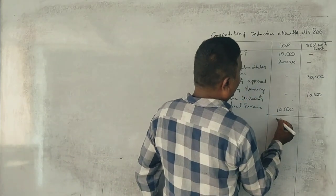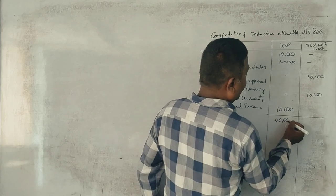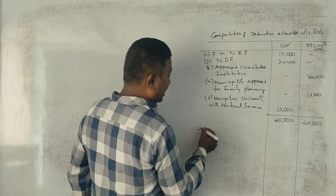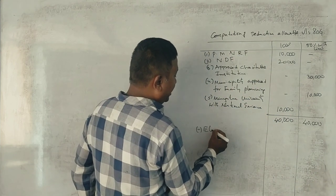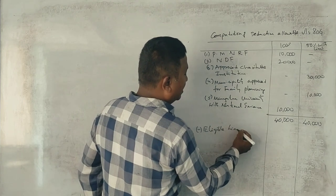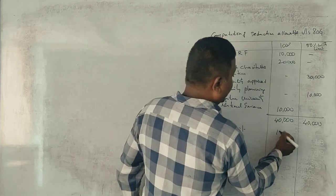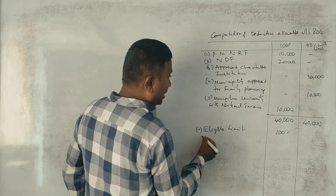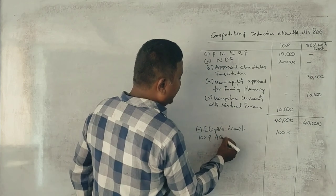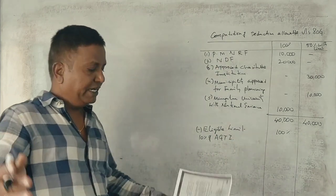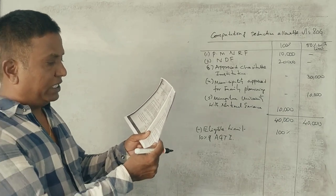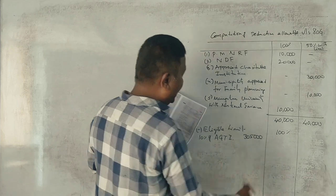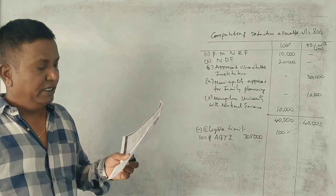So, total amount, total amount, this is 40,000, this is 40,000, less eligible limit. This is 100%, correct? And 10% of adjusted gross total income. Gross total income 3,05,000 rupees, correct? Yes.